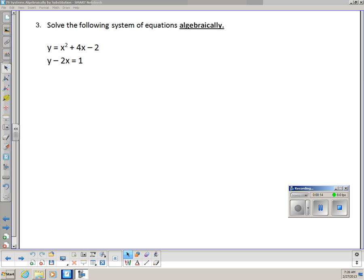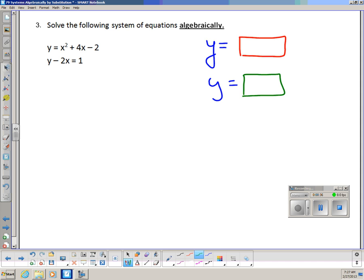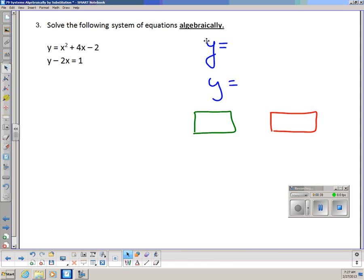There are two methods of solving systems algebraically. One method is to solve the system by what's called substitution. By substitution, what we want to say is we want to get the system to say y equals something and y equals something else. And since both of those things are equal to y, they have to be equal to each other. And that's the idea.